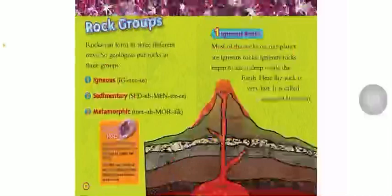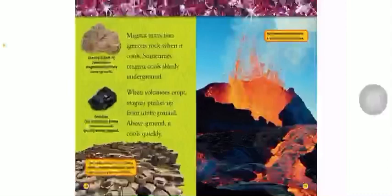Igneous rock. Most of the rocks on our planet are igneous rocks. Igneous rocks begin to form deep inside the earth, where the rock is very hot — it's called magma. Magma turns into igneous rock when it cools. Sometimes magma cools slowly underground. When volcanoes erupt, magma pushes up from underground and above the ground, where it cools quickly. Magma that flows from the volcano is called lava.